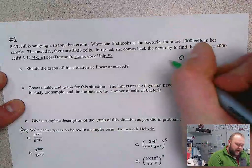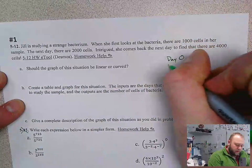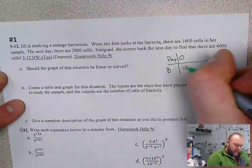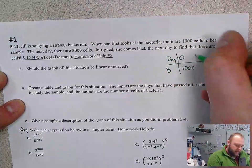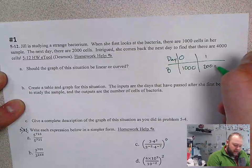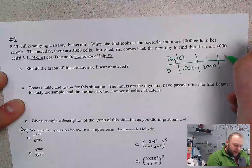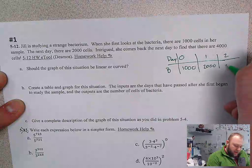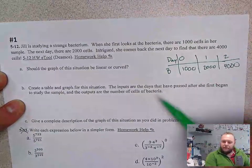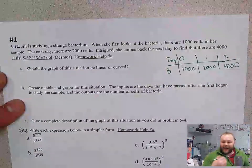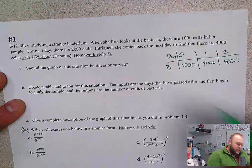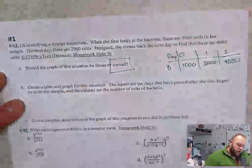On day zero, there were 1,000 bacteria cells. On day one, the next day, there were 2,000. On day two, there were 4,000. I can see that this is a multiplicative relationship, not an additive relationship, where I multiply the previous value by 2. So therefore, it should be curved.